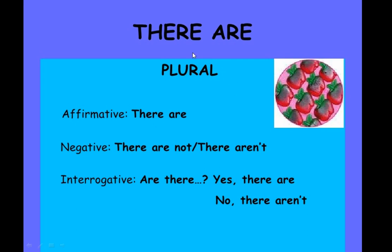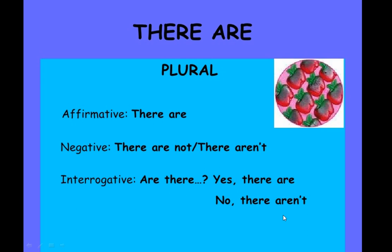'There are' is used in plural sentences, whether affirmative, negative, or interrogative. The forms are: there are, there are not, there aren't, are there, yes there are, no there aren't.